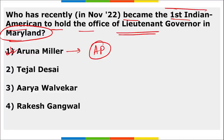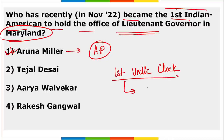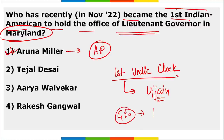The world's first Vedic clock will be installed at Ujjain. What is the theme of the G20? As we know, India will be having the G20 presidency, and the theme released by Prime Minister Narendra Modi is 'Vasudhaiva Kutumbakam.'